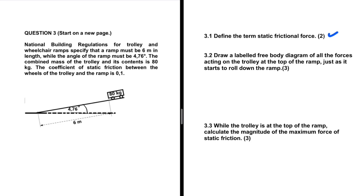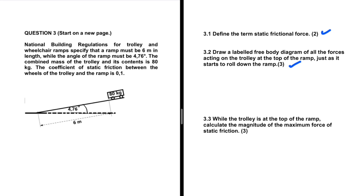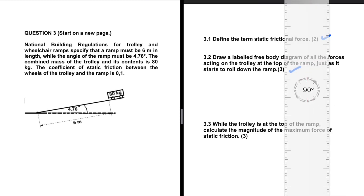Let's go ahead and take a look at 3.2: draw a labelled free body diagram of all the forces acting on the trolley at the top of the ramp, just as it starts to roll down the ramp. National building regulations for trolleys and wheelchairs specify that the ramp must be 6 meters in length, while the angle of the ramp must be 4.76 degrees. The combined mass of the trolley and its contents is 80 kg. The coefficient of static friction between the wheels of the trolley and the ramp is 0.1. How do we then draw our free body diagram?